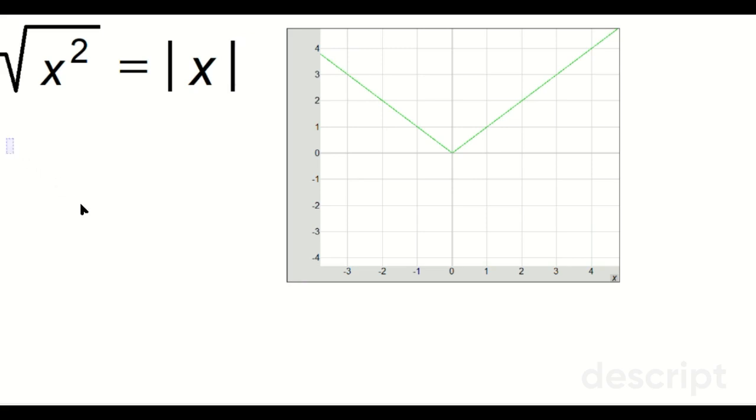So that means when you do this in practice, for example, the square root of negative 2 squared is equal to the absolute value of negative 2, which is positive 2.